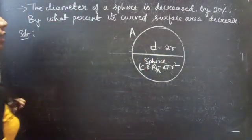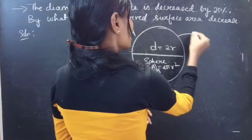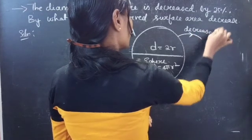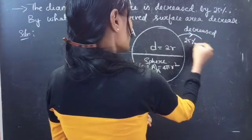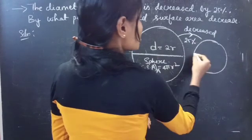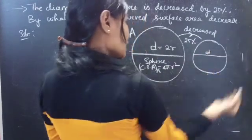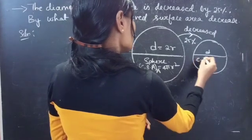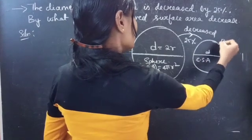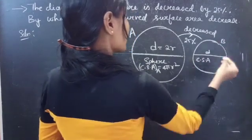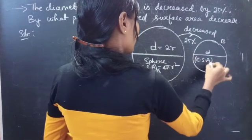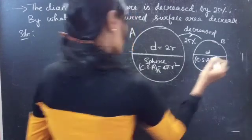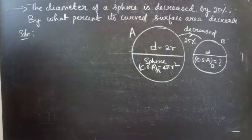If the diameter gets reduced or decreased by 25%, there forms a new sphere with a new diameter and a new curved surface area. Let us name the new sphere as B, and the curved surface area for this will be unknown.